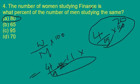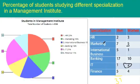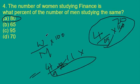Next question: the number of women studying finance is what percent of the number of men studying in the same department? In the finance department, men is 5 parts out of 9 and women is 4 parts out of 9. So women as a percent of men is: 4 divided by 5 into 100, that is 80% is the answer.